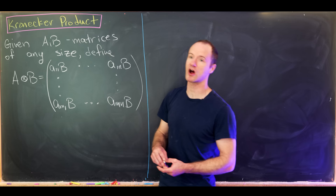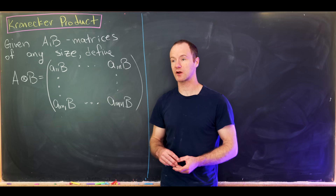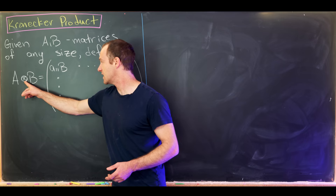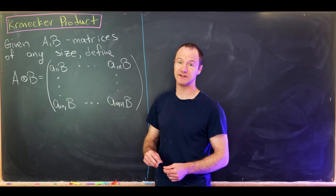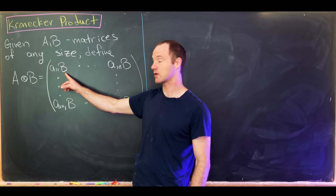Let's first define it, then look at an example, then talk about some properties of the Kronecker product and why it's an interesting object. So let's say A and B are matrices of any size. Then A⊗B — it looks like a tensor product symbol, and we'll see why that notation is adopted — is going to be a somewhat larger block matrix. We have the a₁₁ entry times the entire matrix B.